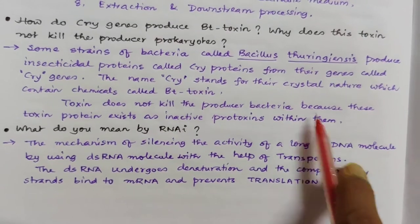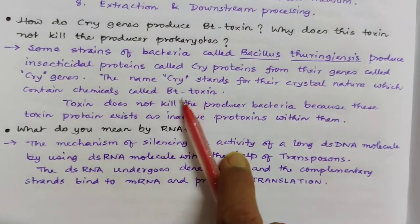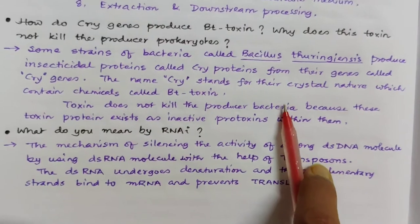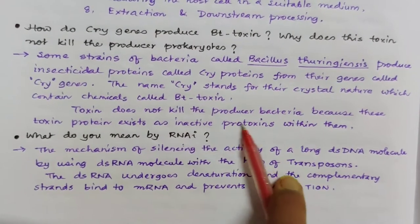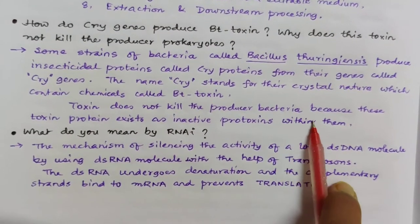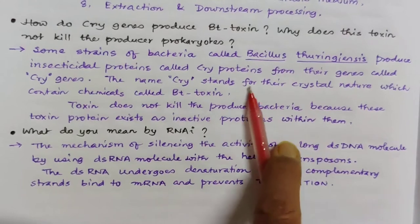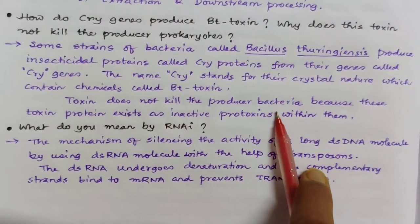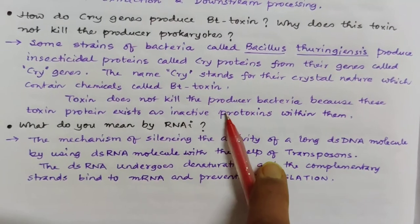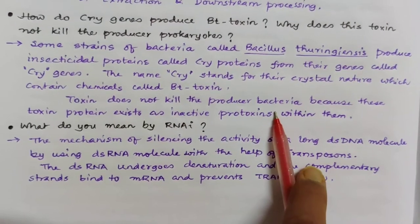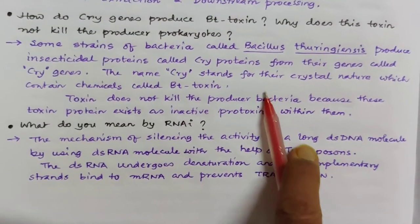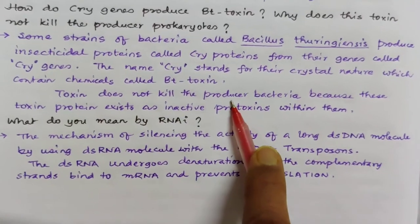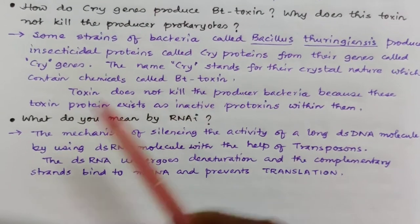When insects eat the bacteria, the gut of insects is alkaline in nature. This alkaline environment activates the protoxins, and these activated toxins then kill the insects. The toxin is effective against insects of different orders.